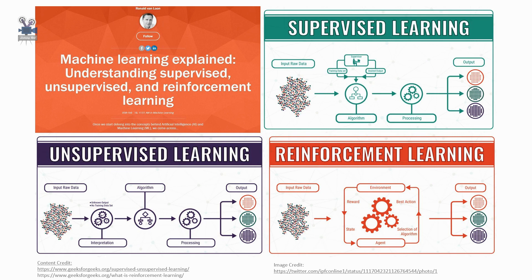There are two types of reinforcement. First, positive reinforcement: positive reinforcement is defined as when an event occurs due to a particular behavior, it increases the strength and frequency of that behavior — in other words, it has a positive effect on the behavior. Advantages of positive reinforcement learning are maximizing performance and sustaining change for a long period of time. Disadvantage: providing too much reinforcement can lead to an overload of states, which can diminish the results.